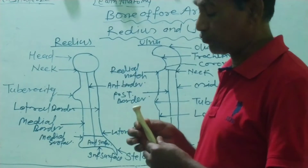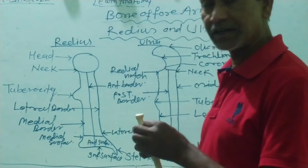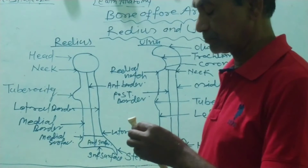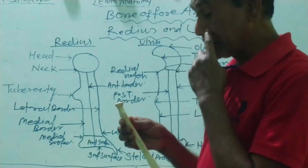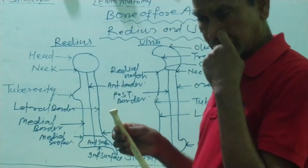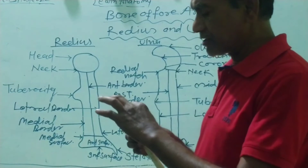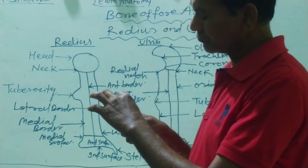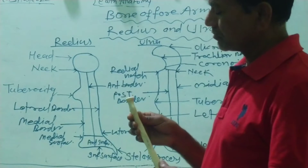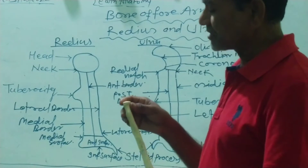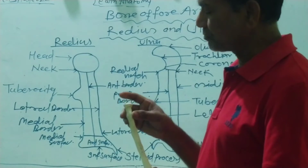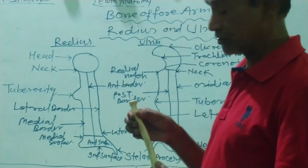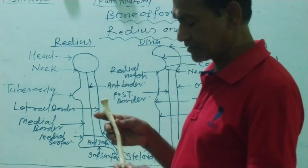Below the neck is a rough raised area or tuberosity. The upper end of the radius has three parts: number one, the head; number two, the neck; and number three, the tuberosity.